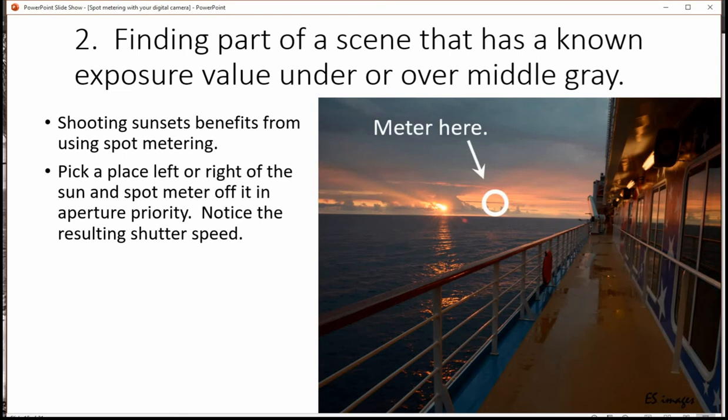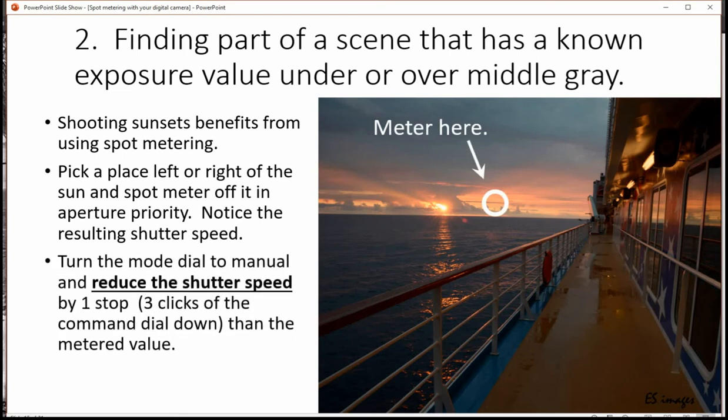This is important. You've got to remember the shutter speed. Then I turn to manual mode and I reduce the shutter speed by one full stop, which is generally three clicks of the command dial. Then I reframe and take the picture and your sunset will always come out with nice vivid colors. It works every time.